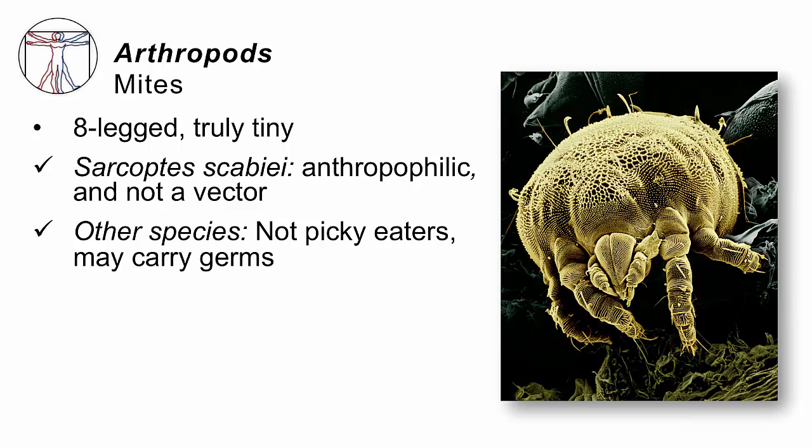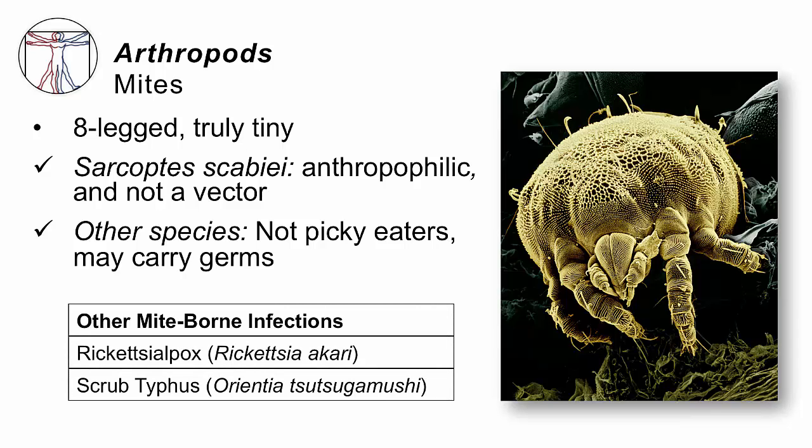Next come the mites. These are truly tiny, no-see-um germs — they have eight legs and are almost barely visible, pretty much microscopic. We've talked about scabies as one of those germs; scabies is not a known vector of human infection in terms of other germs. But there are other mite species adapted for creatures like mice or birds that can accidentally spread infections to humans. The most classic are rickettsial pox, caused by Rickettsia akari, and scrub typhus, caused by Orientia tsutsugamushi. You'll learn about these elsewhere in the course.